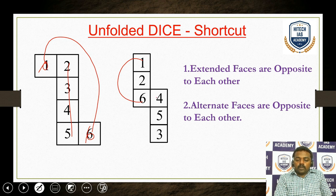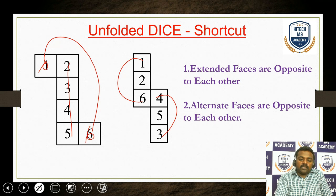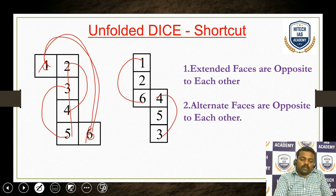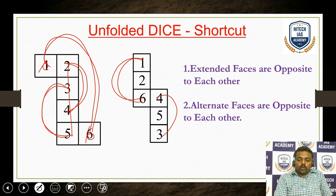For example, 4 and 3 are opposite. In this diagram, 3 and 5 are opposite. 2 and 4 are opposite. In the right side diagram, 1 is opposite to 6, 4 is opposite to 3, and 2 is opposite to 5.